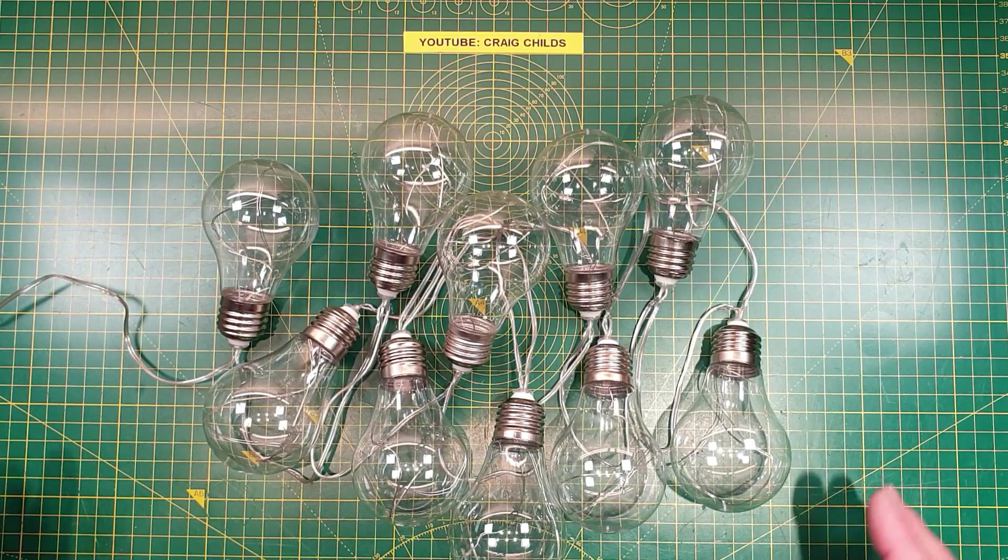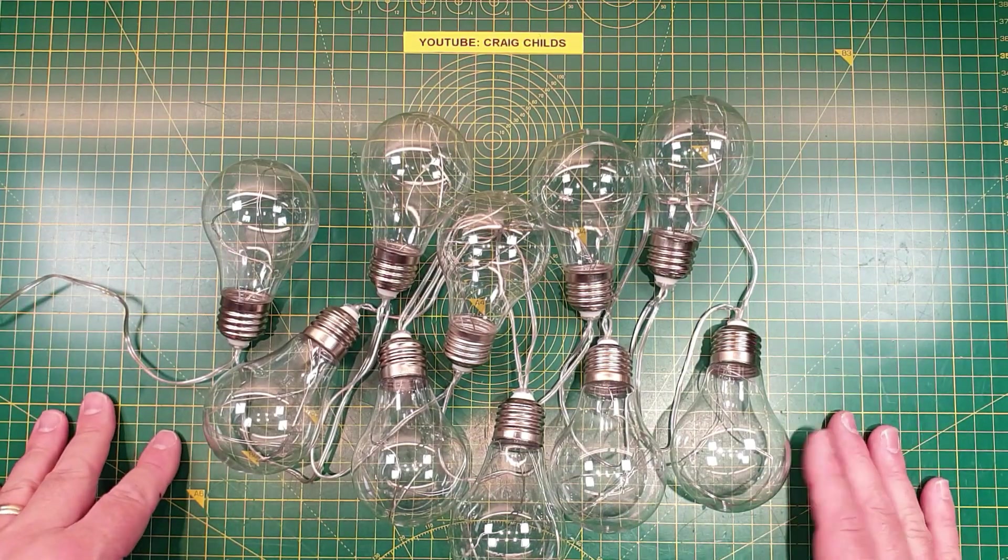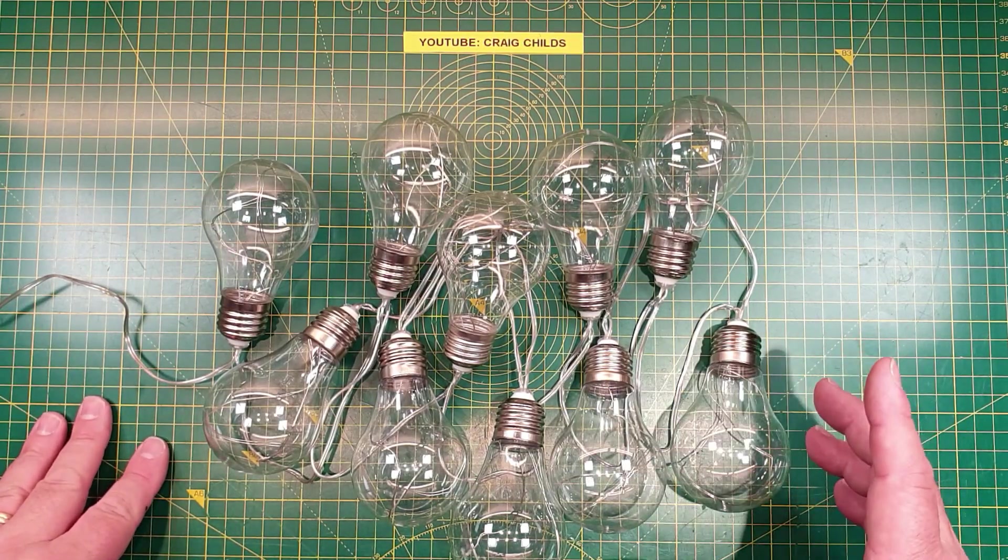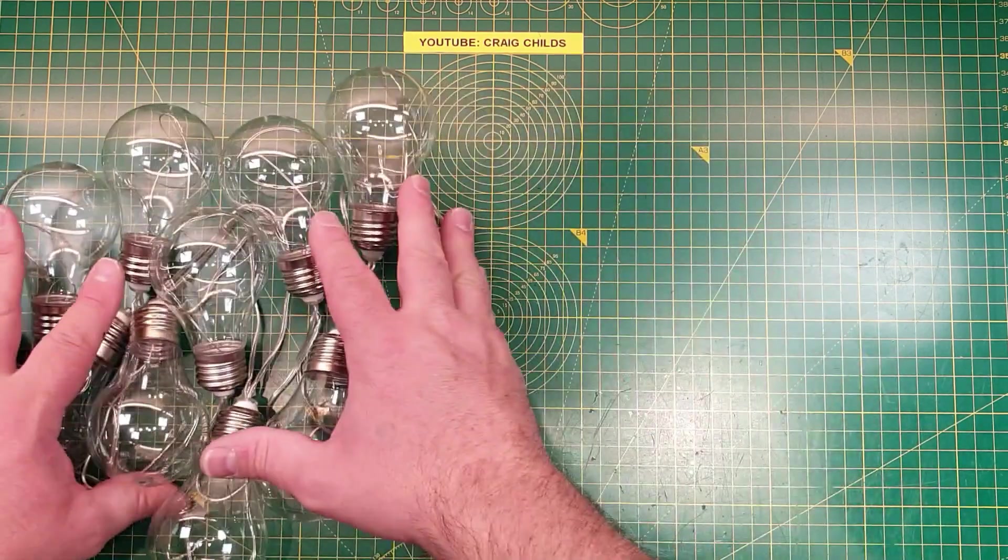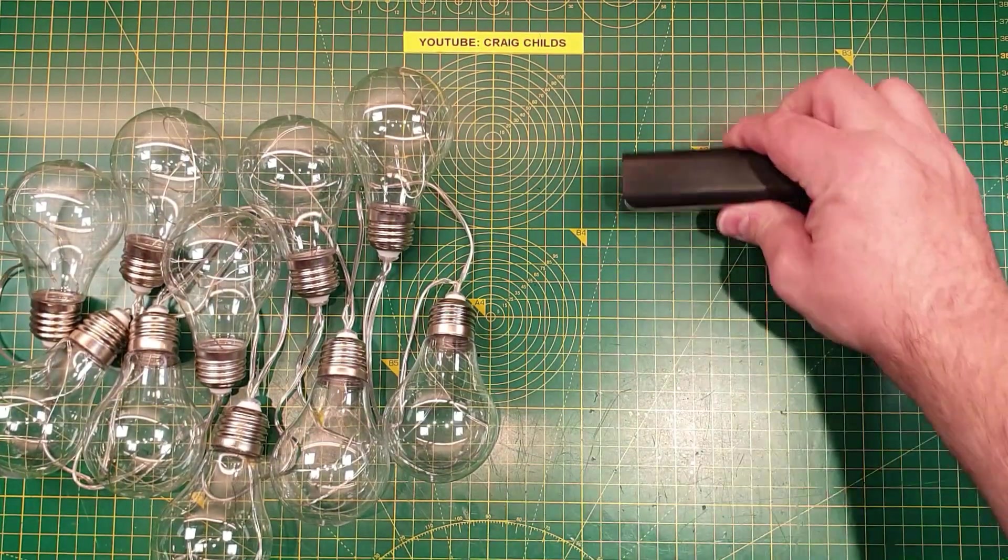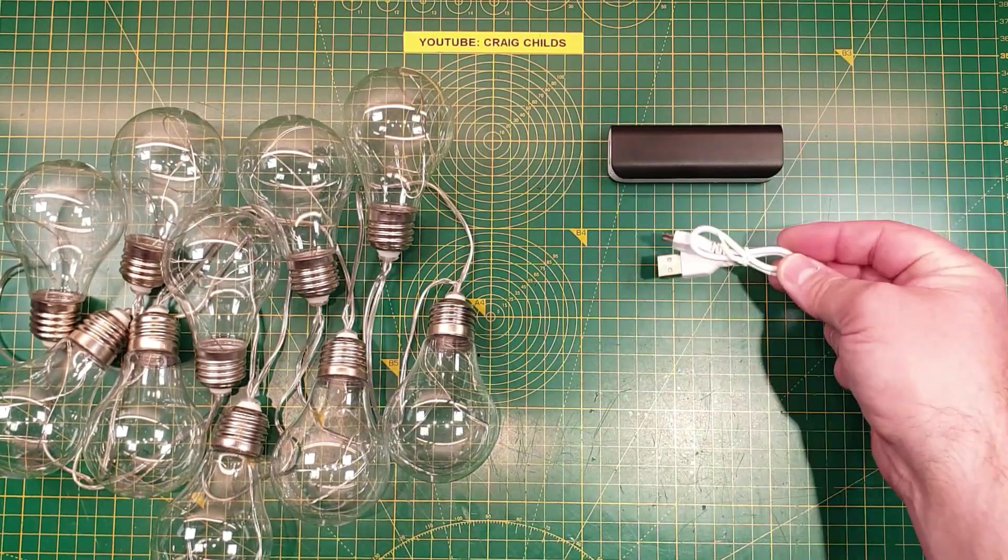For this project you'll need a set of garden solar lamps with 30 LEDs on a string. You'll need one power bank and the cable that comes with it.